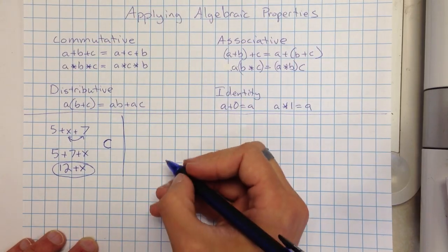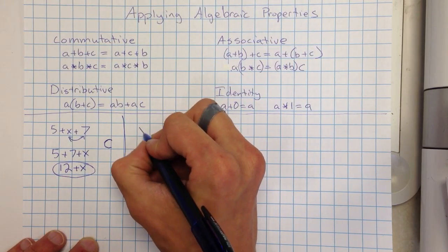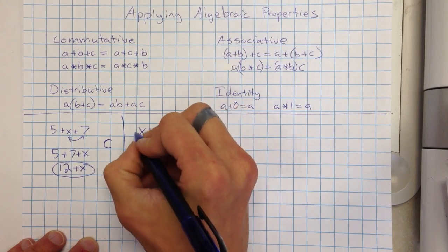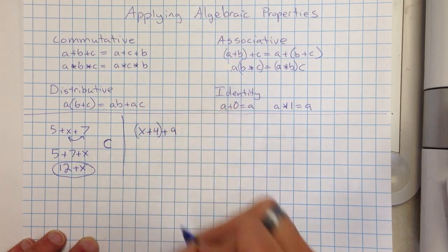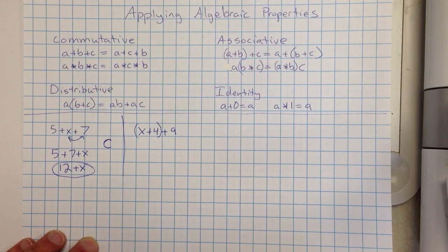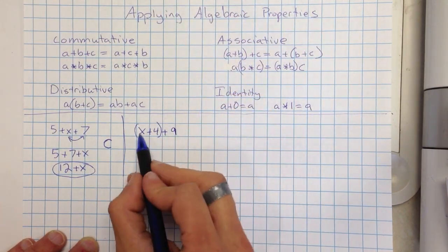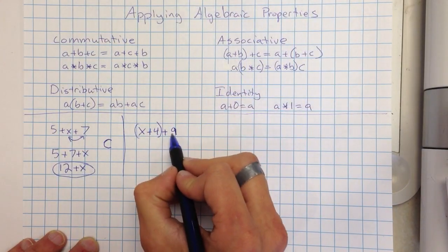Let's say I had another problem. Let's say I had X plus 4 plus 9, but the X and the 4 are in parentheses. I can take that and I can make that an easier problem, or sort of simplify it. If I take my parentheses and realize this is all addition, so it really doesn't matter which two numbers I add first.